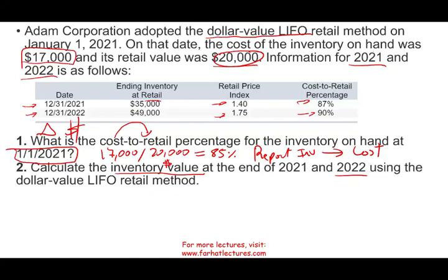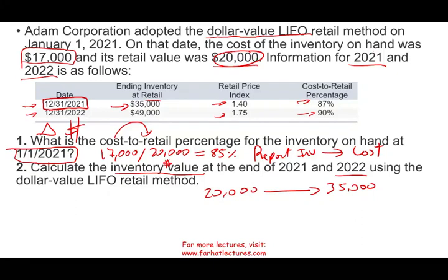Let me show you what happened a year later. At 12-31-2021, you have ending inventory at retail of $35,000. Notice what happened: at the beginning of the year you had $20,000 worth of inventory at retail, and at the end of the year you had $35,000. You might say you have $15,000 worth of new inventory — but is that really true? Not 100%, because this $35,000 is a nominal or inflationary figure.